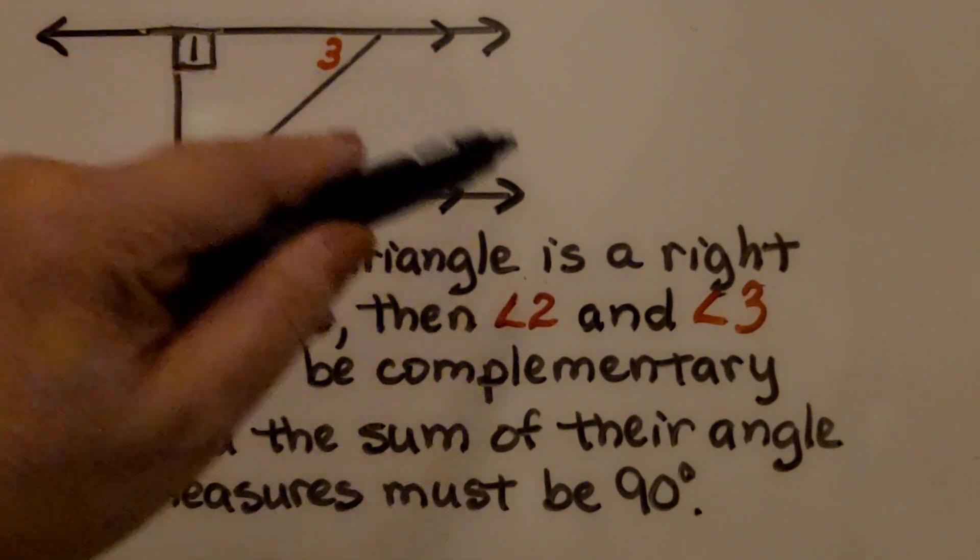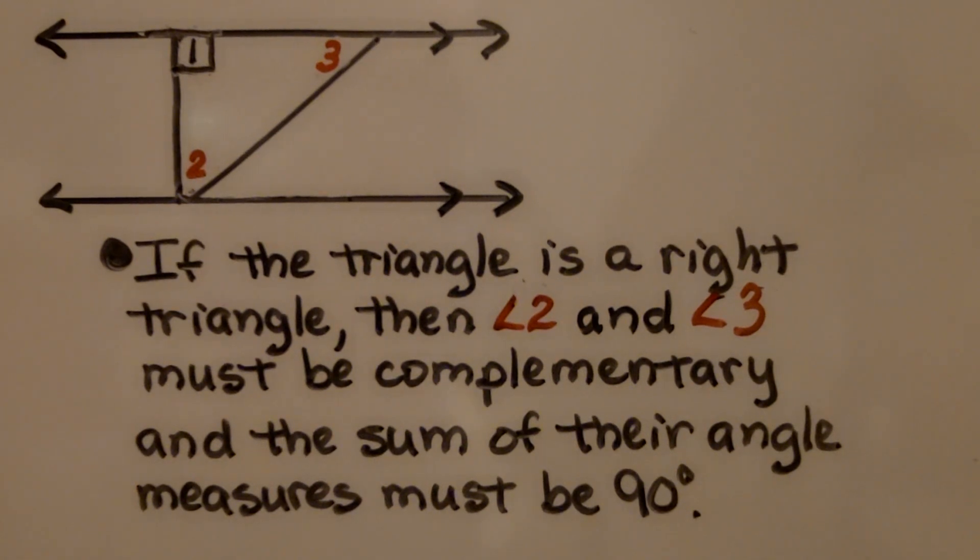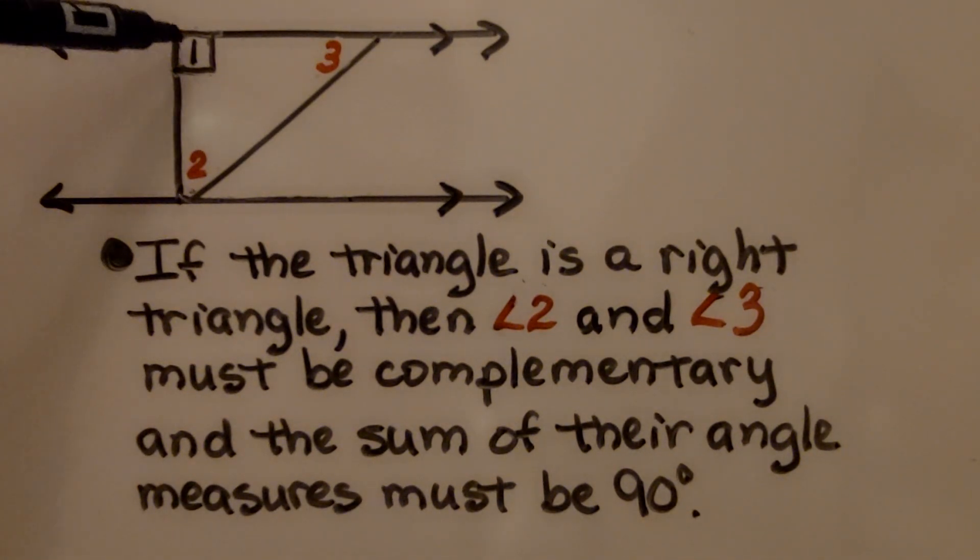If we have parallel lines and we have a triangle and the triangle is a right triangle, well, if we have angle 1 here and it's the right angle of the triangle, that means angle 2 and angle 3 must be complementary and the sum of their angle measures must be 90 degrees.